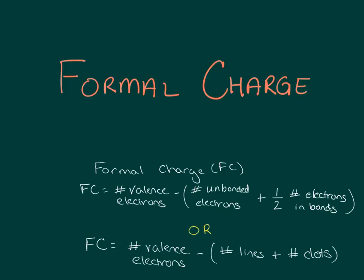This video demonstrates how to calculate the formal charge on the atoms of a molecule for which you have already determined the Lewis structure. Formal charge, abbreviated FC, is defined as the number of valence electrons on an atom minus the sum of the number of unbonded electrons plus one-half the number of electrons in bonds.